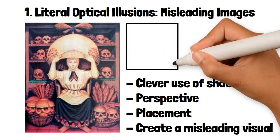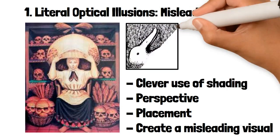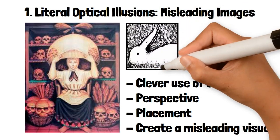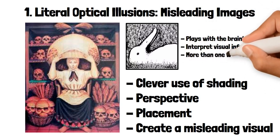For example, a drawing might depict two animals that share the same outline, such as a duck and a rabbit, where the image can be seen as either depending on how you look at it. This type of illusion plays with the brain's ability to interpret visual information in more than one way.